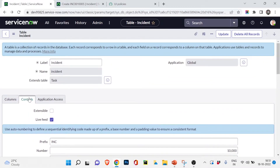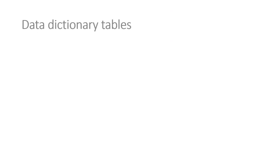Now let's go back to the PowerPoint and understand data dictionary tables. A data dictionary table is a table that stores information about other tables — for example, what type a field is, what actions it performs, and what values it stores. All the ServiceNow tables themselves are also stored in a separate table, and so are the table labels.